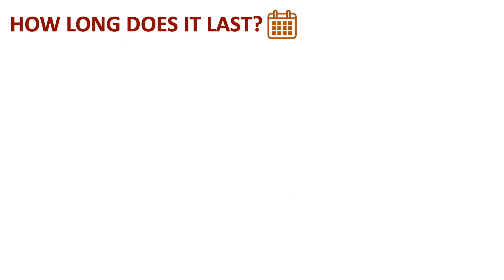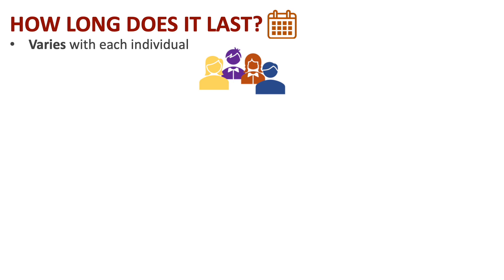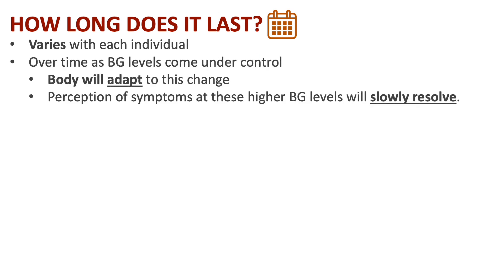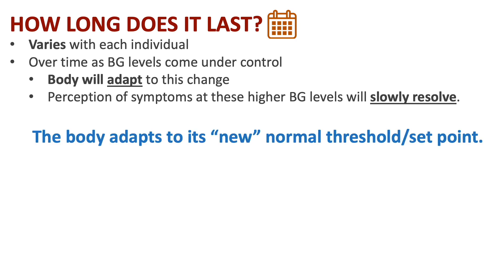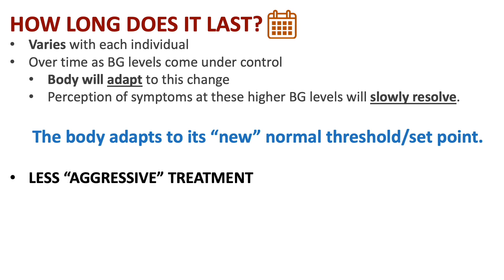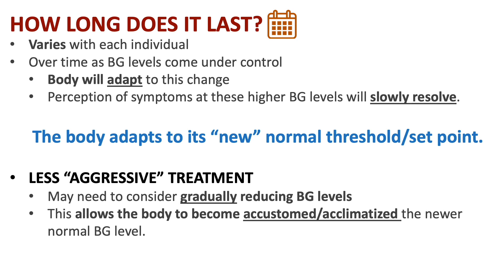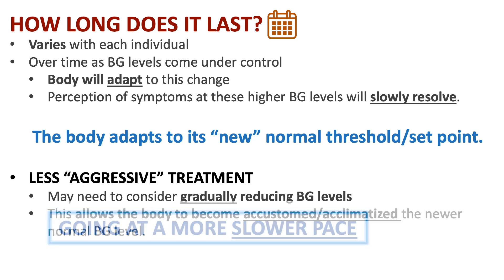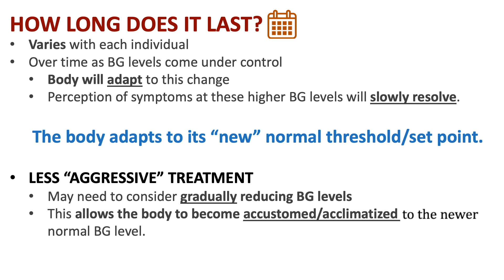So how long does pseudohypoglycemia last? Everyone is different, so this will vary with each individual. Over time, as blood glucose levels become under control, the body will adapt to this change, and the perception of these symptoms at higher blood glucose levels will slowly resolve — the body adapts to this new normal threshold or set point. It may also be necessary to consider a less aggressive treatment, such as gradually reducing blood glucose levels at a slower pace if a person is on insulin. This allows the body to become accustomed to the newer normal blood glucose level.